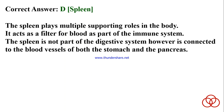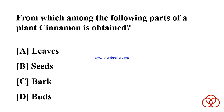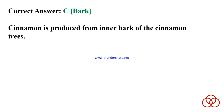From which among the following parts of a plant is cinnamon obtained? A) Leaves. B) Seeds. C) Bark. D) Buds. Correct answer: C. Bark. Cinnamon is produced from the inner bark of the cinnamon tree.